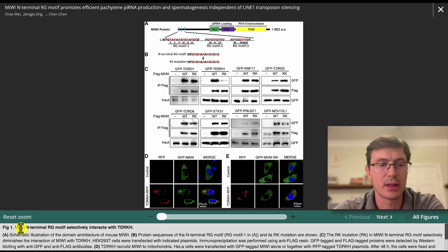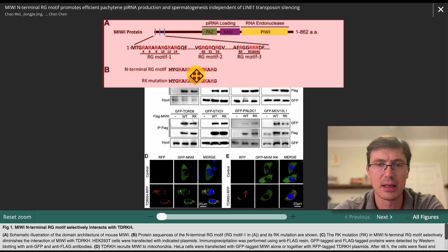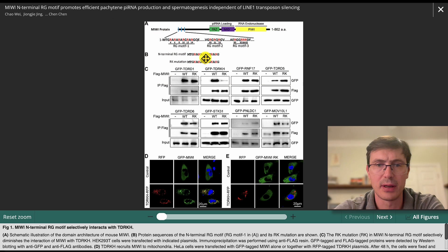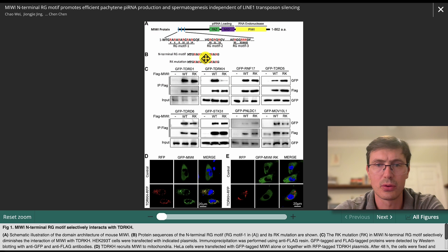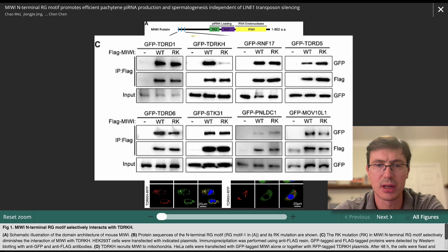So what the authors did here was to mutate this protein, and they checked then the interaction, and they found essentially that for all of these interaction partners, you have the interaction with the proteins, except for this MIUI-TDRK, and they did it.